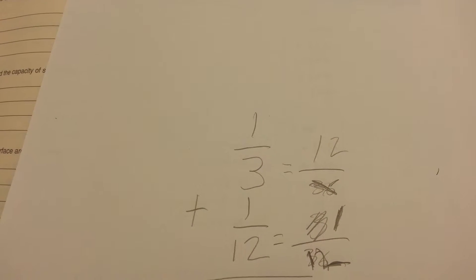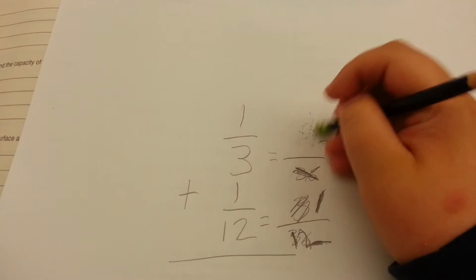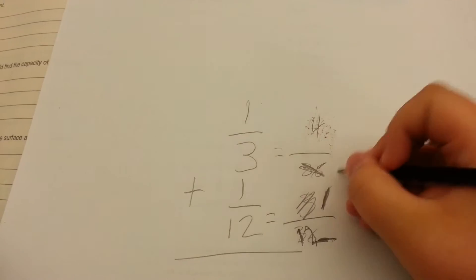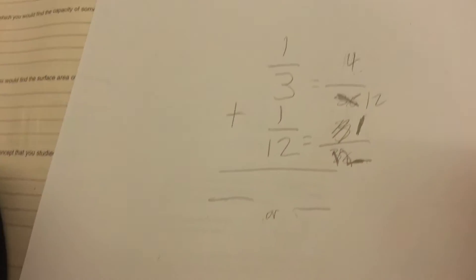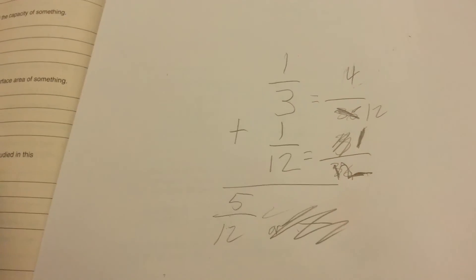Okay. And the top one's going to be four-twelfths, right? Yeah, because four times three is twelve. Right. So four-twelfths plus one-twelfth is five-twelfths. Yeah. Nice job. Guys, you did a really good job.